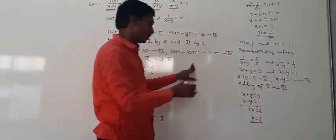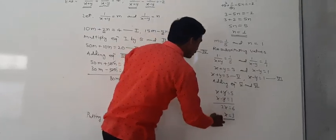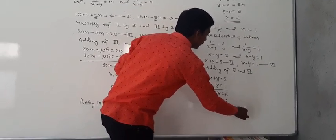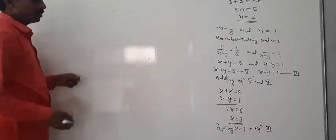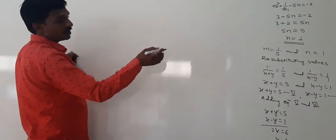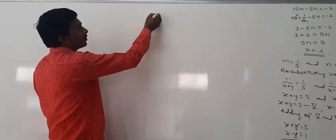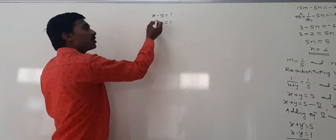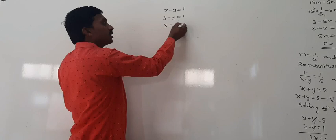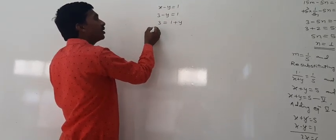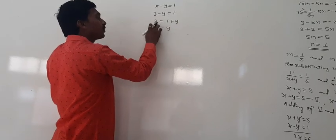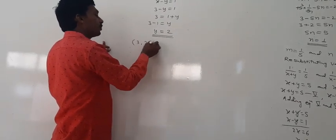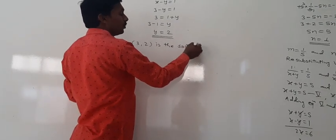Putting x equals 3 into equation 6 (x minus y equals 1): 3 minus y equals 1. Transferring terms, 3 minus 1 equals y, so y equals 2. Therefore the solution of the given equations is x equals 3 and y equals 2.